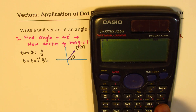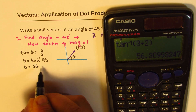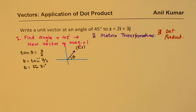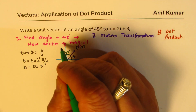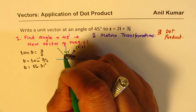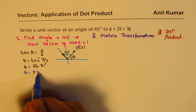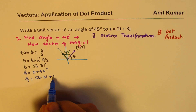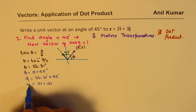So theta equals tan⁻¹(3/2). Using a calculator, tan⁻¹(3/2) = 56.31°, so theta ≈ 56.31°. Now we want to rotate this vector by 45 degrees to get a vector in a new direction with magnitude one unit. The new angle phi = theta + 45° = 56.31° + 45° = 101.31°.